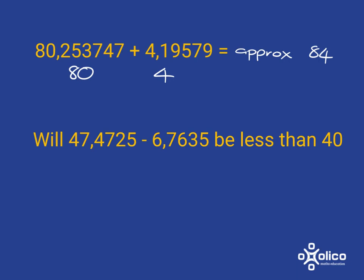So if I'm asked to consider something like this, whether this subtraction will end up with an answer less than 40, I can just think about it a little bit to get to an answer. You see, if I have a look here, I can see that this number, 6.7635, is just a little bit less than 7. And I can see that this number over here is just a little bit more than 47.